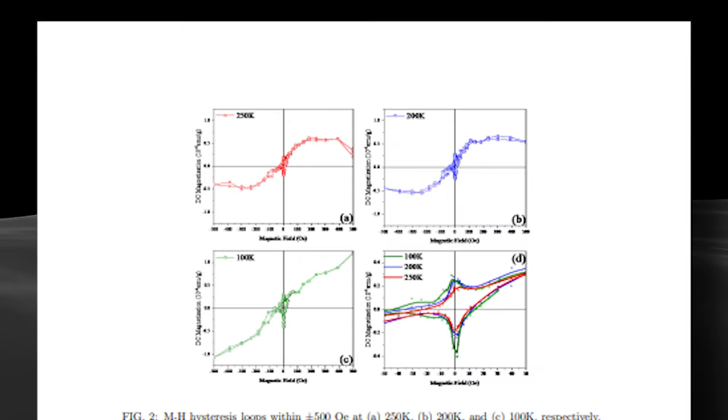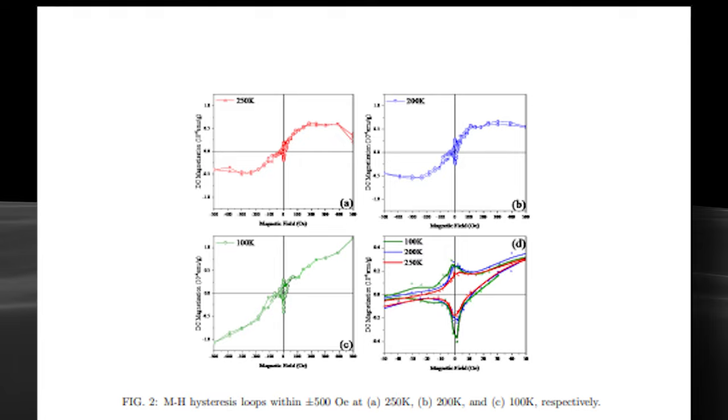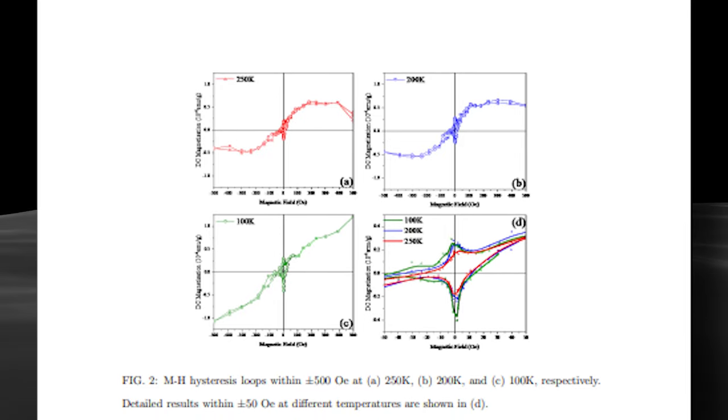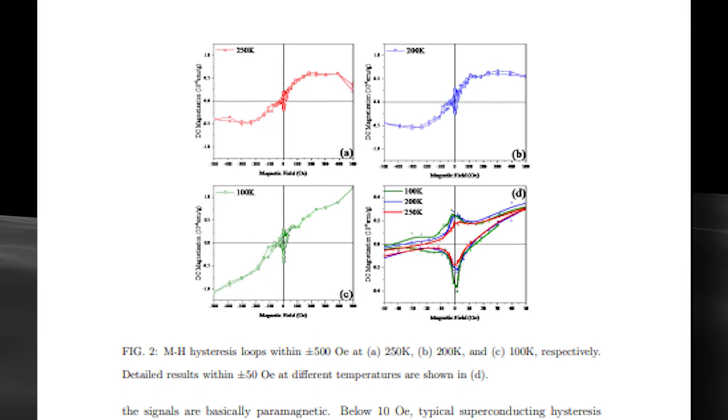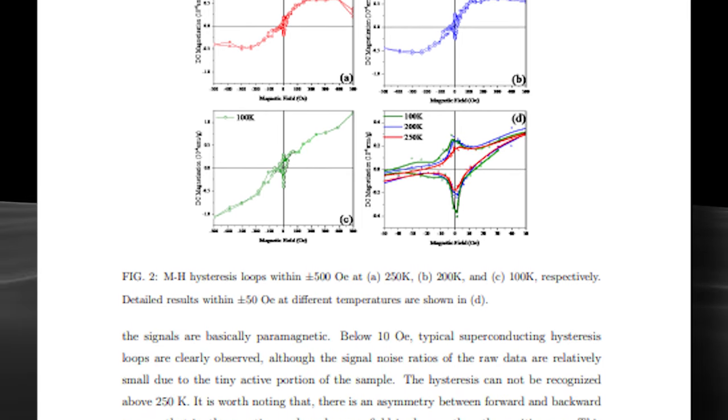Now let's dig into the paper to see what went down in their experiments. After that, we'll take a look at what other researchers are saying about this research. The researchers were basically checking how this material reacts to magnets at different temperatures. They ran tests with light and medium-strength magnetic fields, ranging from 100K to 300K.